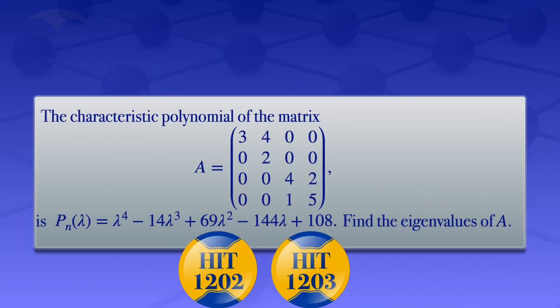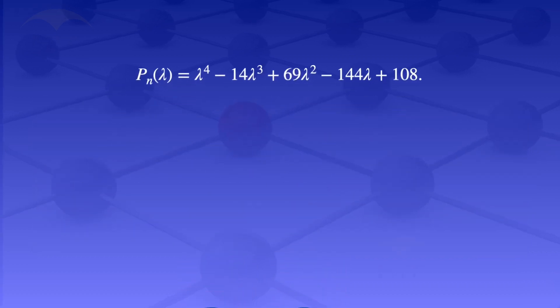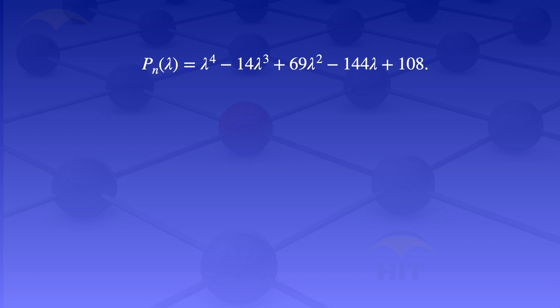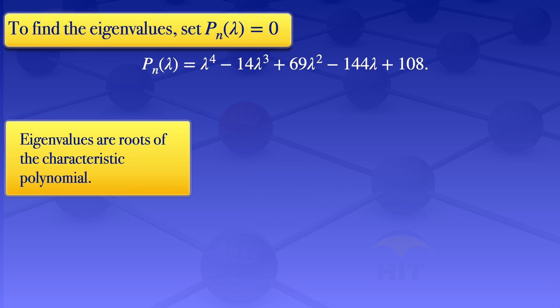The characteristic polynomial of the 4x4 matrix appearing on the screen is λ⁴ - 14λ³ + 69λ² - 144λ + 108. In this tutorial, I am going to find the eigenvalues of matrix A. We are already given the characteristic polynomial P(λ), and since eigenvalues are roots of the characteristic polynomial, we set P(λ) = 0 and solve for λ.